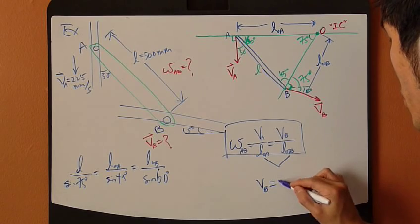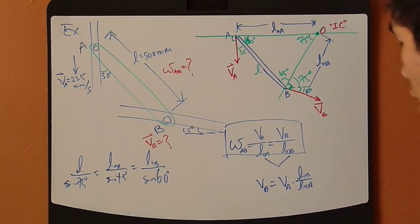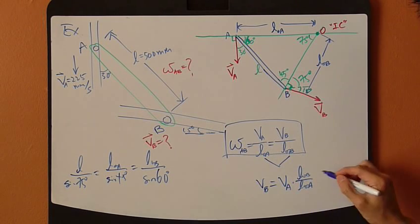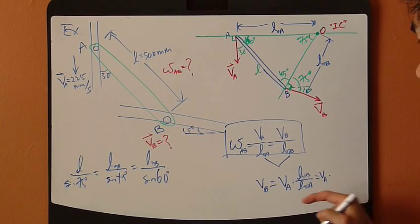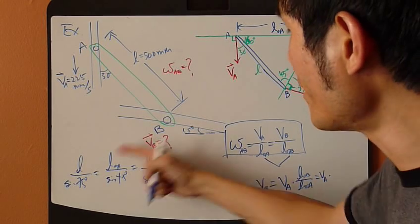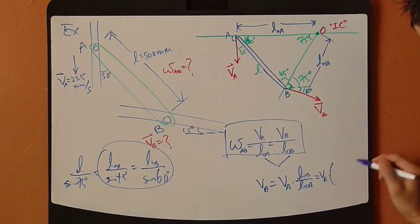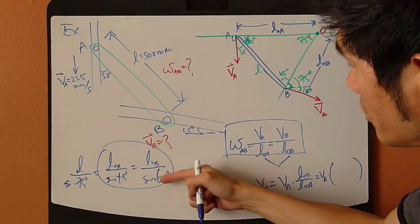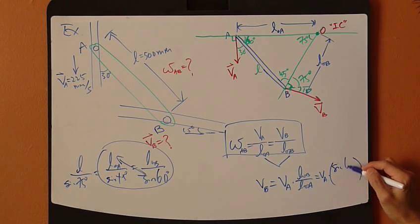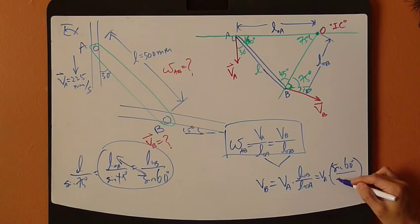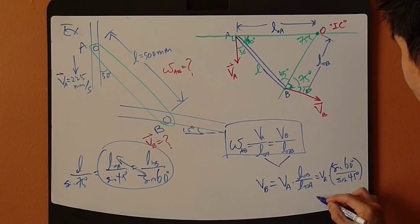So, VB equals VA times LOB divided by LOA. VA is given. So, let's rearrange it. So, LOB divided by LOA equals, just switch these two guys right here. So, that's sine 60 divided by sine 45. See how convenient it is?